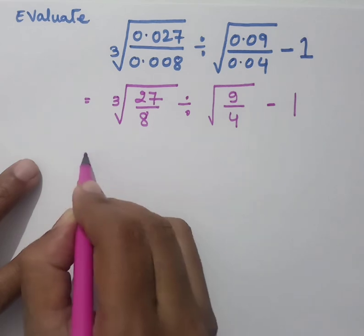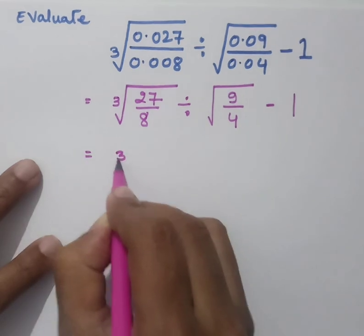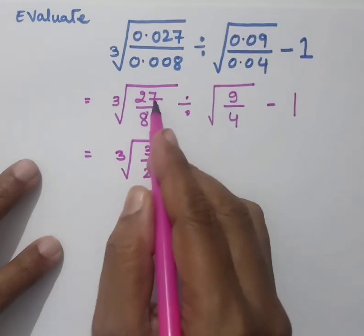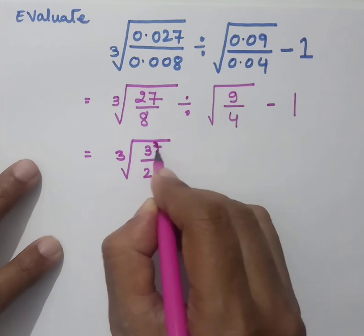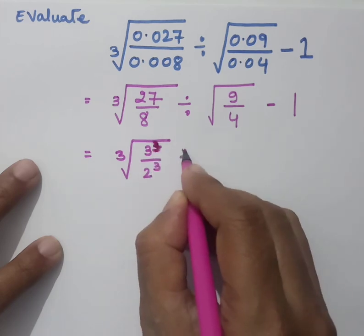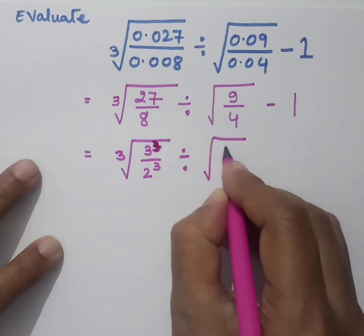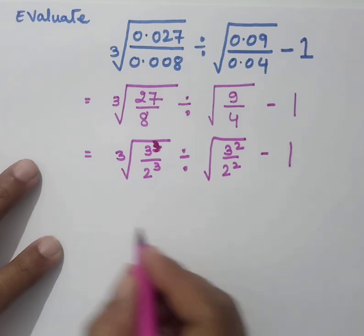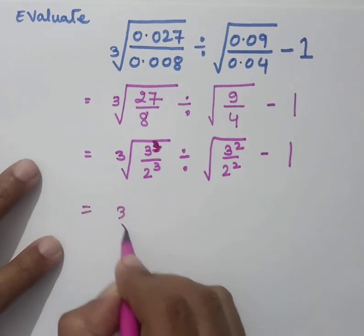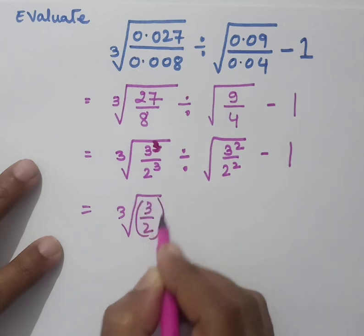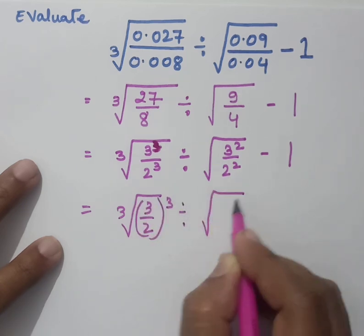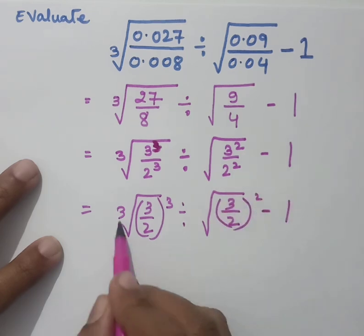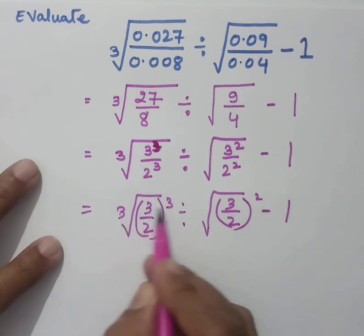Now, 27 by 8 can be written as 3 cube by 2 cube, because 3 cubed is 27 and 2 cubed is 8. So we have cube root of 3 cube by 2 cube. Similarly, 9 by 4 becomes 3 square by 2 square, so we have square root of 3 square by 2 square minus 1. This can be rewritten as cube root of (3 by 2) whole cube divided by square root of (3 by 2) whole square minus 1.